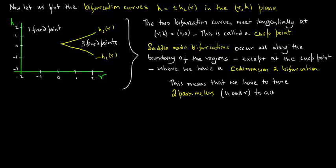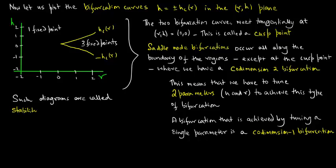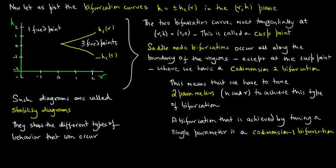This is where we have a co-dimension two bifurcation. This means that we have to tune two parameters, h and r, to achieve this type of bifurcation. A bifurcation that is achieved by tuning a single parameter is a co-dimension one bifurcation.